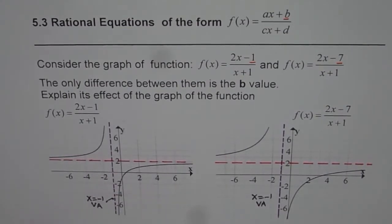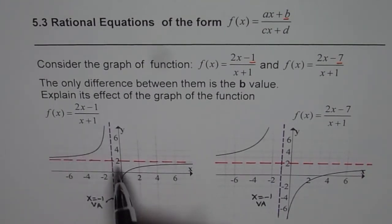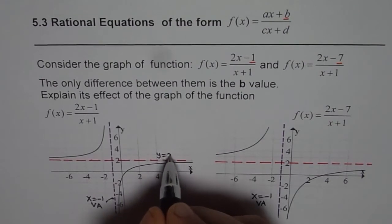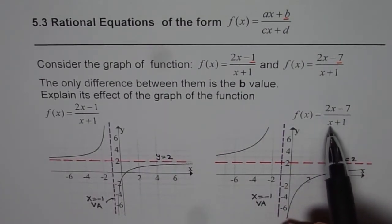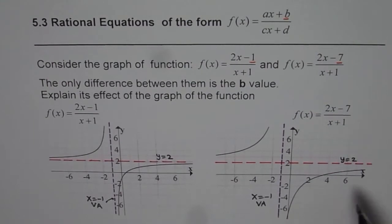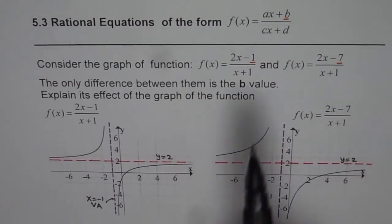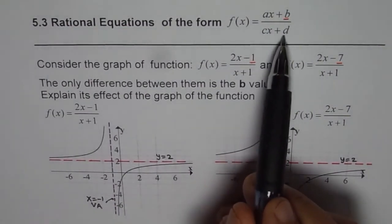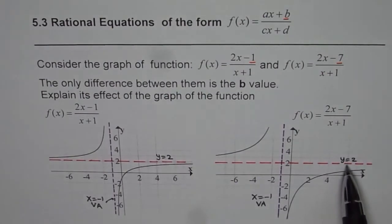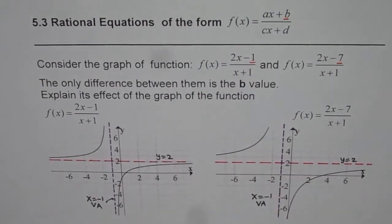The horizontal asymptote is the ratio of the leading coefficients: 2 over 1 is 2, so that is y equals to 2. And this is also y equals to 2. The leading coefficient ratio is exactly the same. The vertical asymptote is basically the ratio of d over c with a negative sign, and the horizontal asymptote is the ratio of a over c.